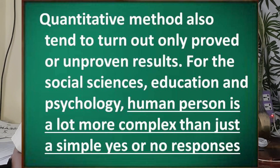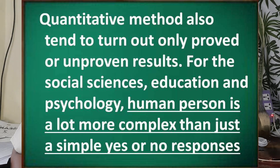Another weakness: qualitative methods also tend to produce only proven or unproven results. For the social sciences, education, and psychology, the human person is a lot more complex than just simple yes or no responses. In fields like psychology or social sciences, they focus on human perspective, opinion, and experiences. We cannot get the real sensory experiences by just asking yes or no questions.